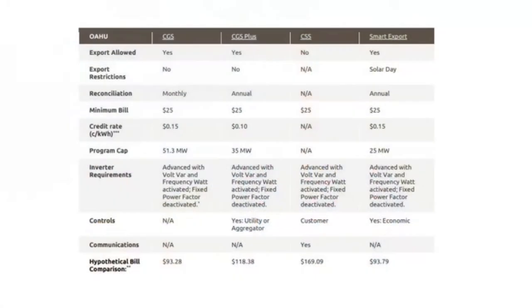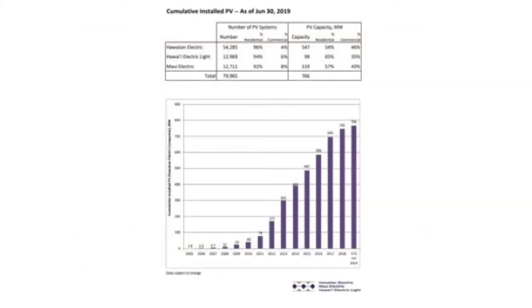Looking at the slide showing the number of solar systems that went in per year, you can see exponential growth for a while that is now flattening out. From 2017 to 2018, the increase in the number of systems and total megawatts going in reduced quite a bit from what it had been earlier. These programs are slowing down the duck curve growth.